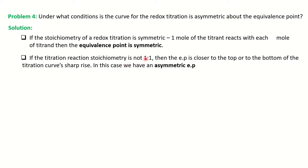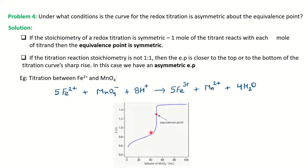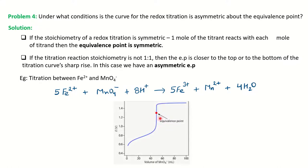But if the stoichiometry is not 1:1, the equivalence point will shift either closer to the top or bottom of the curve and you get an asymmetric equivalence point. For example, in the titration of Fe²⁺ with MnO₄⁻, iron is oxidized to Fe³⁺ by permanganate, which is reduced to Mn²⁺. After balancing, the stoichiometry for iron (analyte) is 5 while for the titrant it is 1 — so the ratio is 5:1. The equivalence point sits slightly toward the top of the titration curve, making it asymmetric.